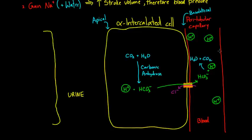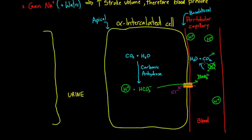What have we really accomplished? We've gotten rid of a proton — we have water and carbon dioxide. The carbon dioxide can be breathed out through the lungs, and water is water, so that's fine. This is fantastic for the blood: we've been able to get rid of some of that acid, which is the whole goal.